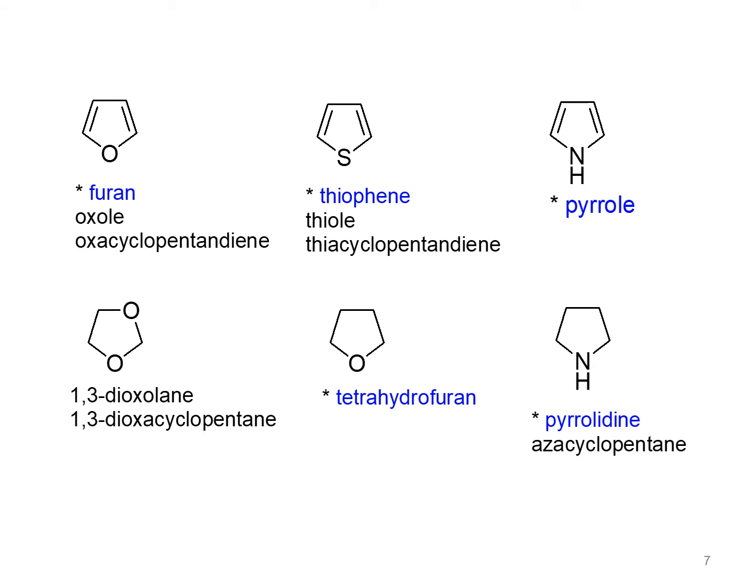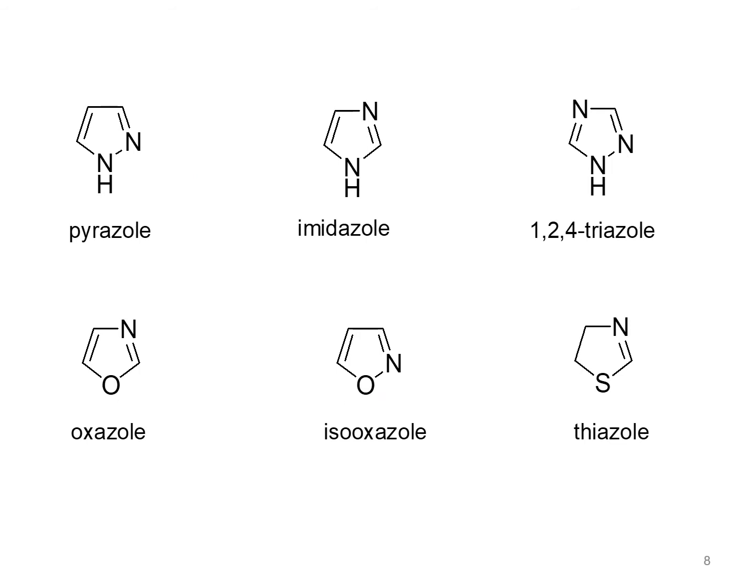Here we can see some five-membered heterocyclic compounds. Most of these compounds are known by their traditional or trivial name, but we can also name them by the IUPAC system and by the Hantzsch-Widman system. For example, furan, thiophene, pyrrole, tetrahydrofuran, and pyrrolidine are known by their traditional names.